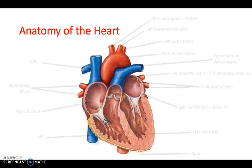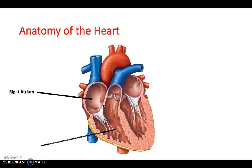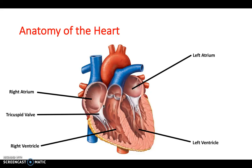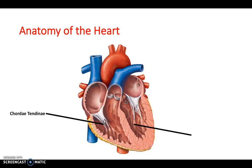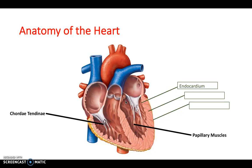Looking inside the heart, you should be able to identify the right atrium, right ventricle, left atrium, and left ventricle. Also identify the tricuspid valve and the bicuspid — clearly differentiated by the fact that the bicuspid has two papillary muscle attachments via the chordae tendineae and the tricuspid has three. You should also identify the fossa ovalis, which is a fetal shunt, and the two semilunar valves: the pulmonary and the aortic. The chordae tendineae attach the valve to the papillary muscles, which can contract to cause the valves to open and close. Remember the three layers: endocardium, myocardium, and epicardium.